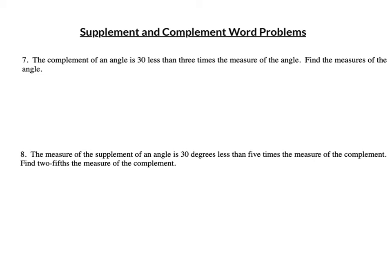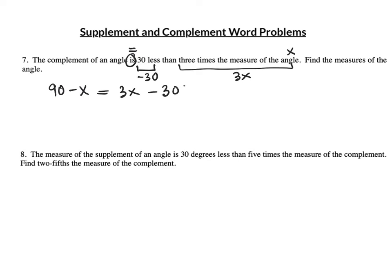Number 7: The complement of an angle is 30 less than three times the measure of the angle. Find the measure of the angle. The complement of an angle is 90 minus x. It equals 3x minus 30 — because 30 less than three times the angle means 3x minus 30. So it's 90 minus x equals 3x minus 30. Solve for x and you've got it.